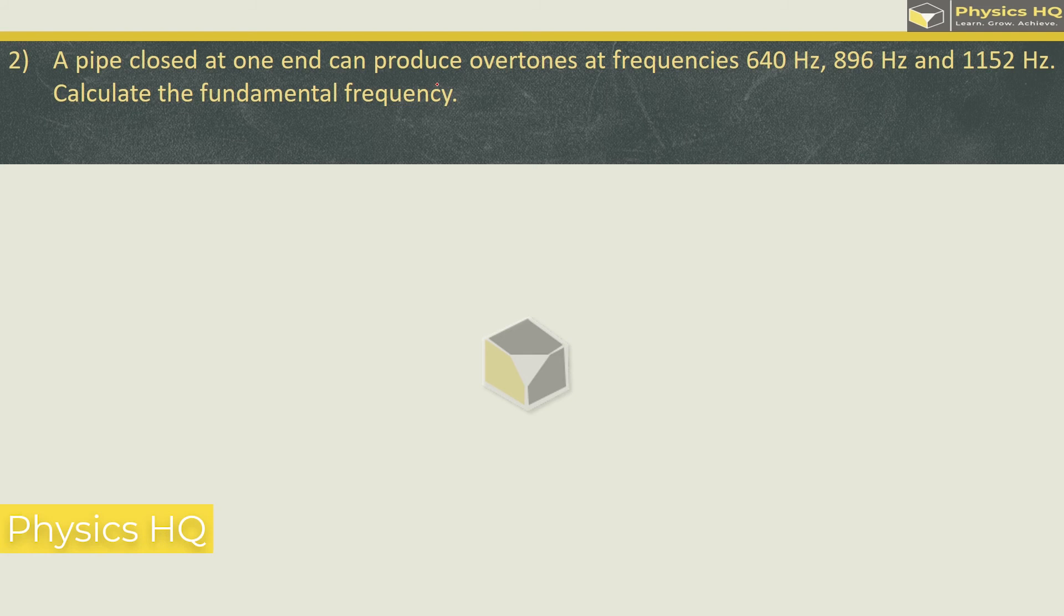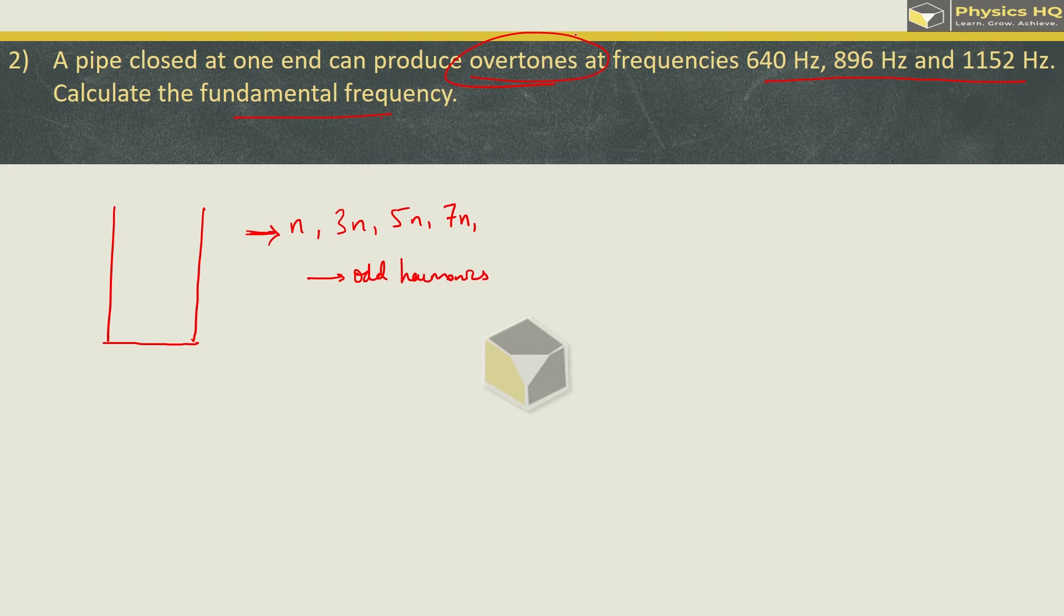Hope you all understood this. Let us check out the next sum. A pipe closed at one end produces overtones at frequency 640, 896 and 1152 Hz. Calculate the fundamental frequency. Now talking about pipe which is closed at one end, frequencies which are available are N, 3N, 5N, 7N. In simple words only odd harmonics are available. Next we need to understand what are overtones. So this frequency is called as fundamental frequency, the first frequency that we get. And every other harmonics are called overtones. So this is the first overtone, this is the second overtone, third overtone and so on.